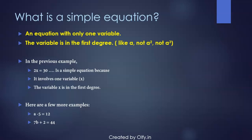A few more examples to look at for simple equations: a minus 5 equals 12. Why is it a simple equation? Because we only have one variable and that is a, and it's also in the first degree. Similarly, 7b plus 2 is 44. There's only one unknown which is b, and again it is also in the first degree.